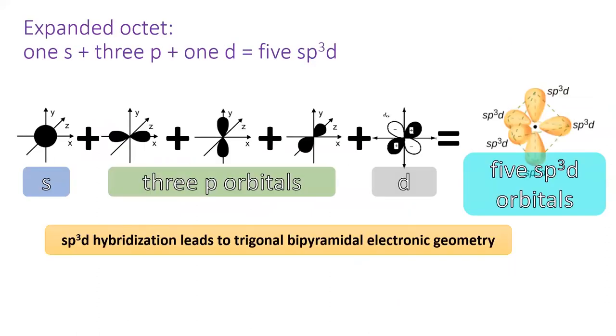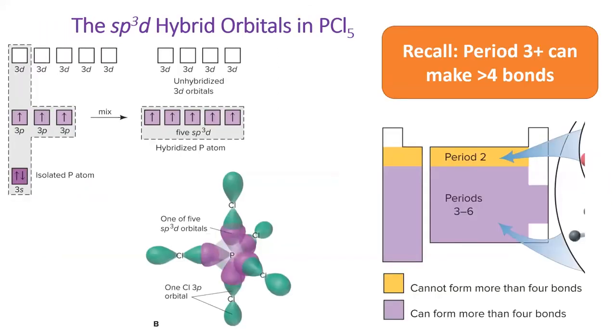Large elements, which exhibit expanded octets, can also mix in their D orbitals. One S plus three P plus one D makes five SP³D orbitals. This corresponds to a trigonal bipyramidal geometry.